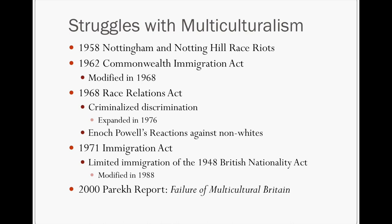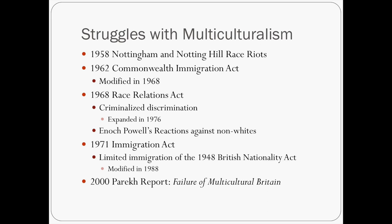This prompted a struggle with multiculturalism. You see it in the early 1960s and late 1950s in places like Nottingham and just outside of London at Notting Hill, where there were race riots. The Commonwealth Immigration Act of 1962, later modified in 1968, was put in place by the Conservative Party to tighten up immigration — you had to have employment vouchers in order to settle in England. Hugh Gaitskell, who was the leader of the opposition party, said it was cruel and brutal anti-color legislation, and it was considered racist.